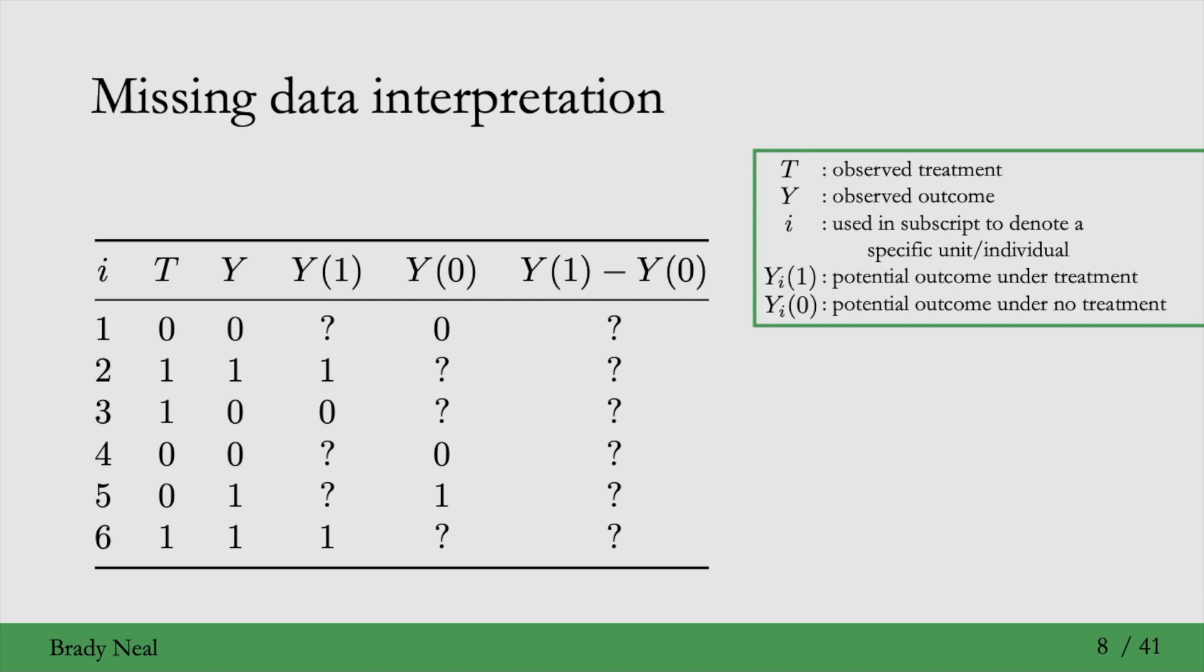The potential outcomes Y(1) and Y(0) here don't have an I subscript, but they're still for the Ith individual. I just don't actually put the subscript there because they're associated with this Ith column. And whenever their potential outcome is associated with a specific I, the I is implicit. And if there is no I there, and there's no implicit I, then it's just a random variable, which is random because it's like you're drawing a specific unit from the population.